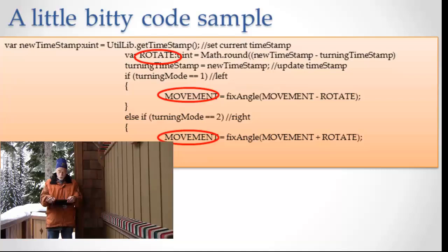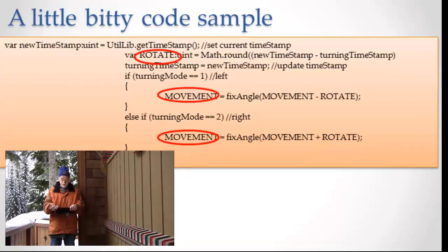I want to point to a couple of words. Can you see the word rotate circle there? And movement. This is a little piece of code, a piece of computer code that's specifically targeted towards what do you do when you press one of the keys that makes you turn.